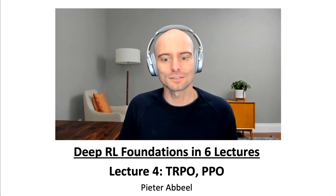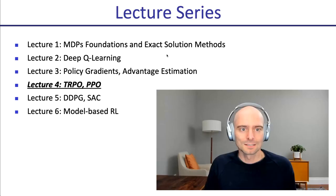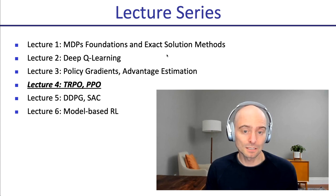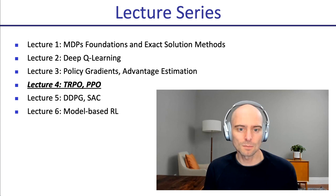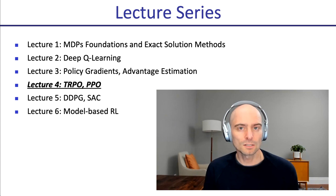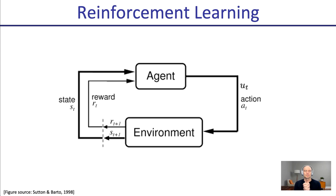Welcome to lecture four in the sixth lecture series on the foundations of deep reinforcement learning. A quick refresher on where we're at: we already covered MDPs and some exact solution methods in lecture one. We looked at deep Q learning, which deals with larger scale problems. Then we started looking at policy gradients and advantage estimation in lecture three, ending up with a quite complete and good policy gradient algorithm. Now in lecture four, we're going to see some ways to make that even better.